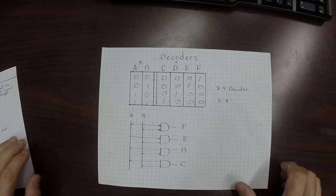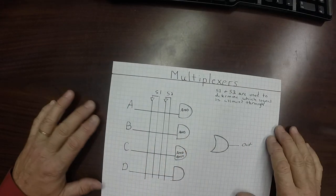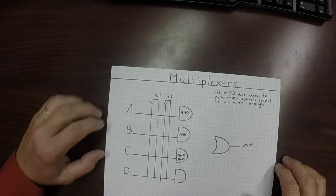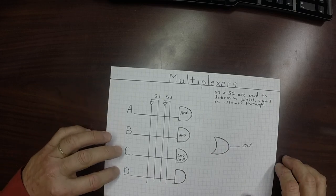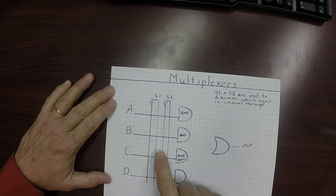We use decoders in multiplexers. So let's look at multiplexers. In a multiplexer, what I want to happen is I want to have signals A, B, C, or D, and I want that signal to come out in a single location.